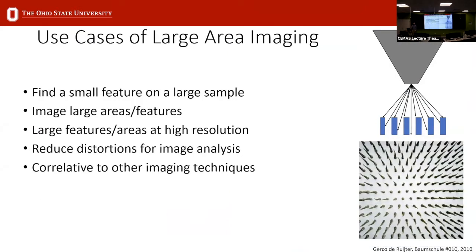The main use cases for large area mapping are: finding a small feature on a large sample — which can cost hundreds of hours of SEM time — so doing a large area map beforehand to navigate back efficiently; imaging large features at high resolution with reduced distortion; and enabling correlation between the electron image, lower resolution maps, and other imaging techniques such as light microscopy, AFM, or TEM for higher resolution work.